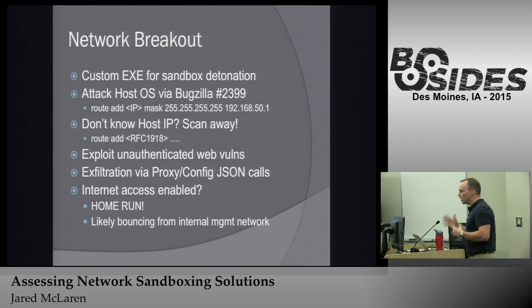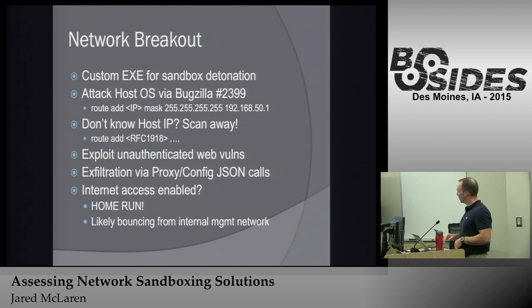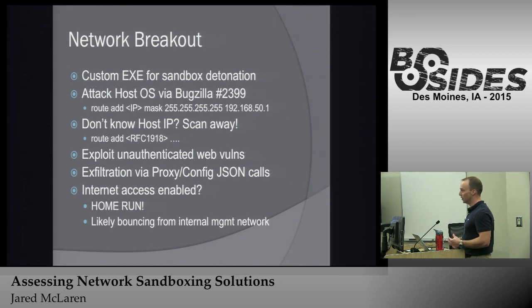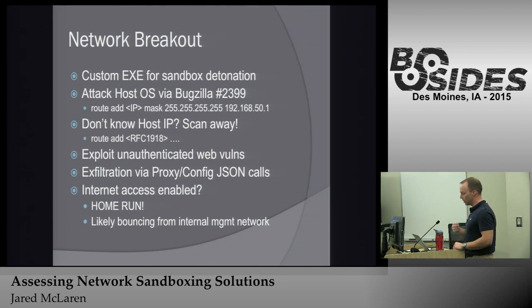Building up the full attack: make custom malware to execute in the sandbox, shove it in. We know the gateway is predictable at 192.168.50.1. Using that Linux multi-homed routing behavior, you can add a route. If you know the IP address of the management interface, you add a route over 50.1 to that management interface and communicate right back to the main sandbox system without internet access being enabled — and start exploiting all those unauthenticated web bugs. You can entirely own the system without internet access. If you don't know the IP, just add routes for all RFC 1918 blocks and scan for a hit — that hit will be the management interface of the ATD sandbox environment.